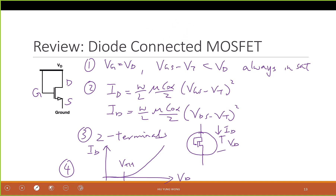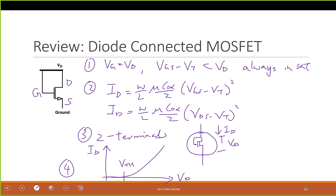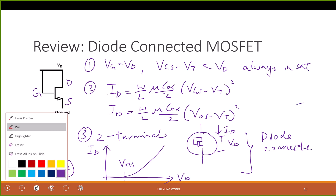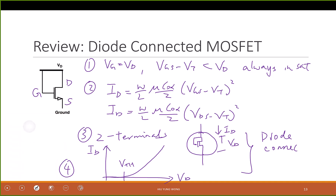This looks like a diode. That's why it's called a diode-connected MOSFET. I connect the gate to the drain — it's just like a two-terminal device because I connected them together. And it behaves like a diode because I need the drain voltage, which is the gate voltage, to be larger than the threshold voltage to turn it on. It is only square, not exponential. However, it's still a diode because by definition, a diode doesn't need to be exponential. A diode conducts in one direction.